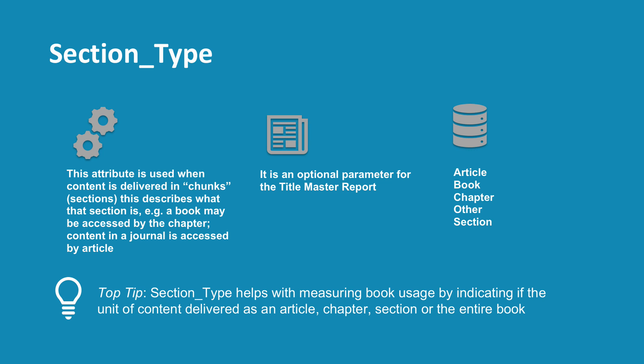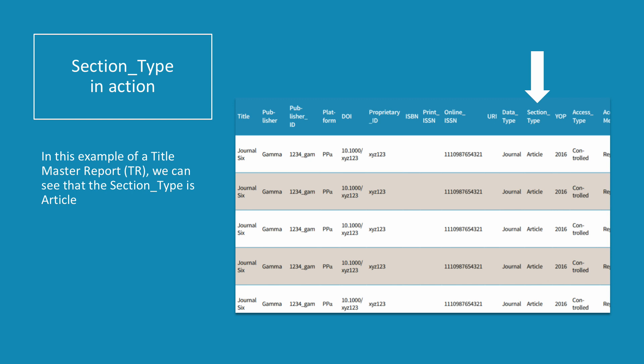The next attribute we'll discuss is Section Type, which is used when content is delivered in chunks or sections, and it describes what that section is. For example, a book may be accessed by the chapter, while content in a journal is typically accessed by article. Section Type is an optional parameter for the Title Master Report. Our top tip is that Section Type can help with measuring book usage by indicating if the unit of content delivered was an article, a chapter, a section, or the entire book. In this example of a Title Master Report, we can see that the Section Type is Article.